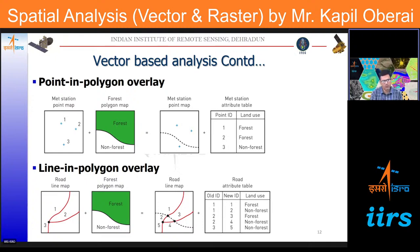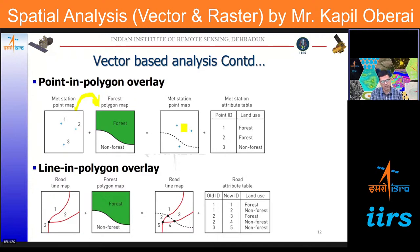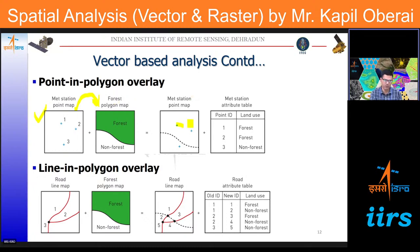We can also perform different types of overlays, such as a point-in-polygon overlay. For example, given a net station map denoted by point symbols and a forest polygon map with forest and non-forest regions: if we overlay them, we can find out how many points fall within the forest or outside. Considered individually, the net station map gives no information about whether those features are within the polygon, but the moment we integrate or overlay the layers together, we can get that picture.